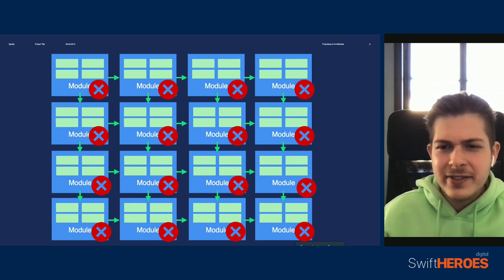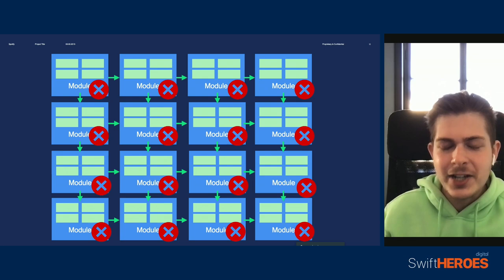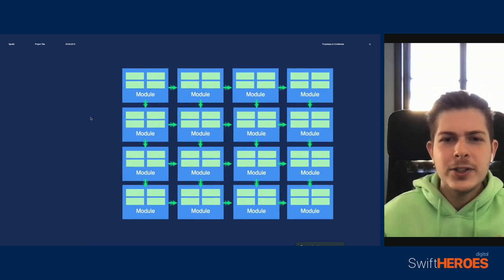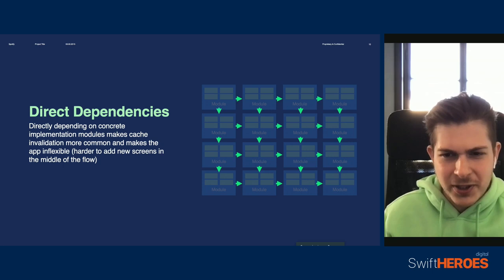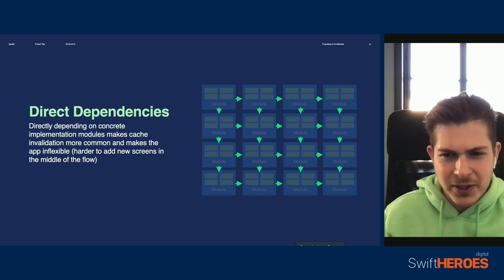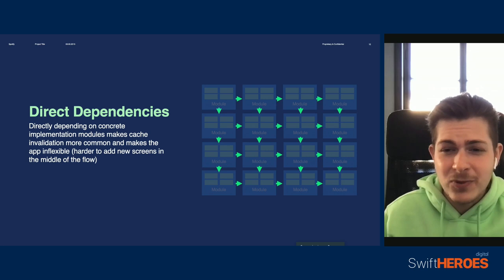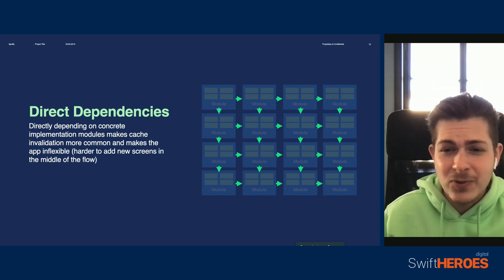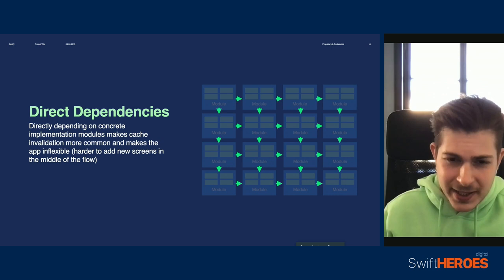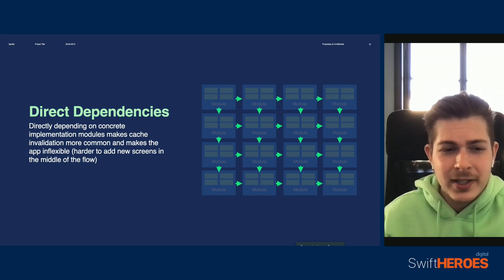This is actually a very common problem, and it's why you may find yourself in a situation where changing something small, like the type of a property, actually ends up causing a huge chunk, if not the entire project, to be rebuilt. To make matters worse, these direct dependencies may also put you in a situation where it is difficult to make changes in the app. If these view controllers or whatever other objects we're creating have dependencies that we need to pass, we may need to carry over these dependencies all the way across the modules. This is going to make your classes end up with dozens of parameters that they don't even need, and large changes like adding new screens in the middle of a flow might actually become impossible without rewriting huge chunks of the app.